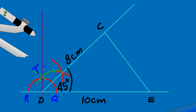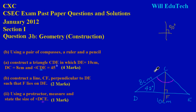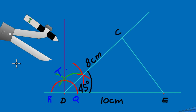Let's go back to the board. We now have triangle DCE with DC equal to 8 cm, DE equal to 10 cm, and the 45-degree angle. We now need to construct the perpendicular line CF, so let's get into that.